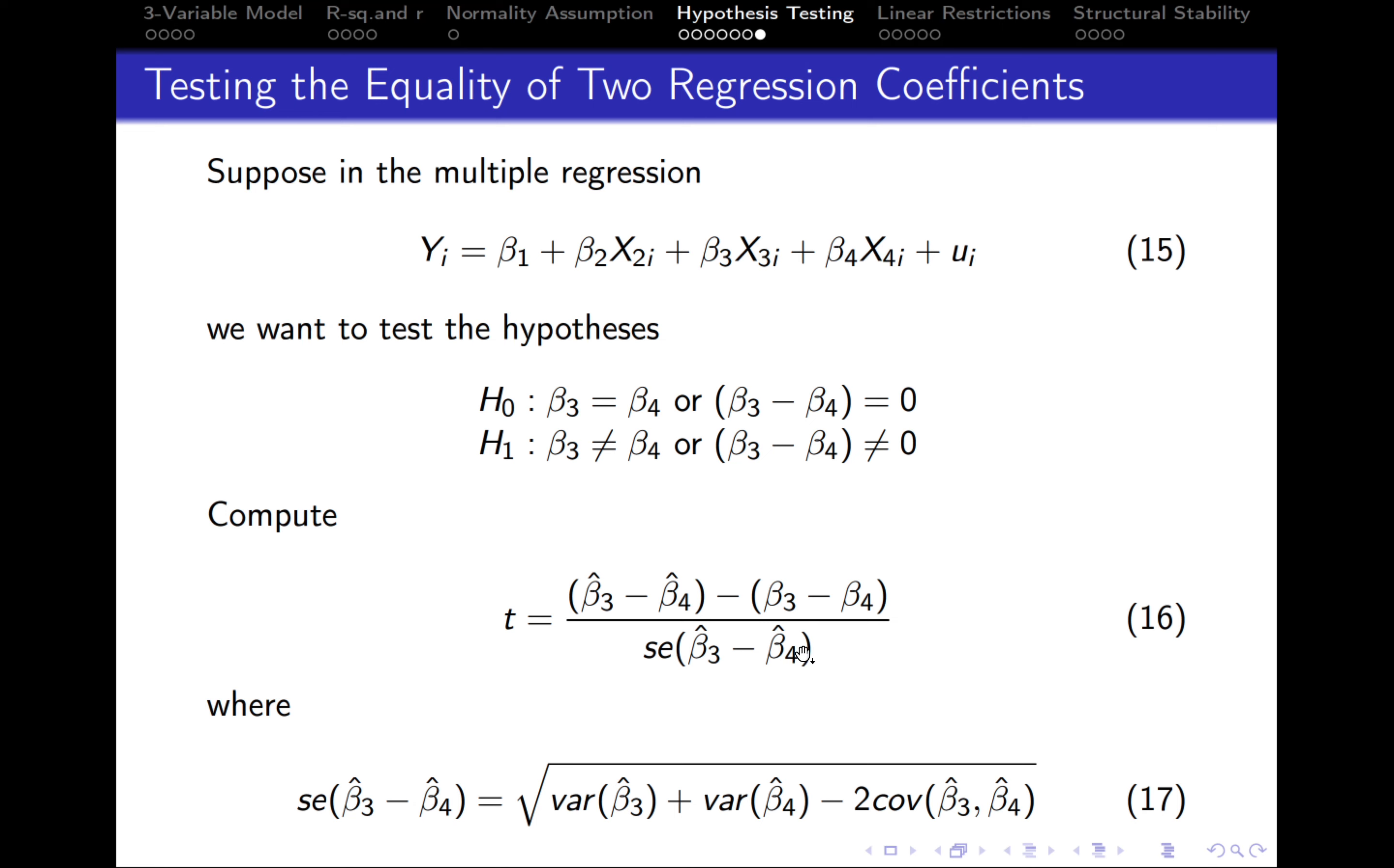To get the value in the denominator, we can use the following formula. So the standard error of the difference is equal to the square root of variance of beta 3 plus variance of beta 4 minus 2 multiplied by the covariance between beta 3 and beta 4.